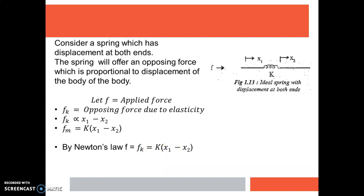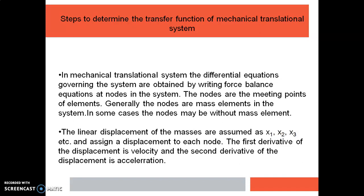These three are the basic force balance equations for these three elements. Now we will discuss the steps to determine the transfer function of a mechanical translational system. From the given mechanical translational system, we will identify the nodes. Nodes are nothing but the meeting points between the elements, and we know the force balance equations of each of the basic elements.